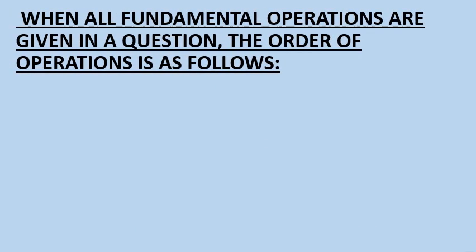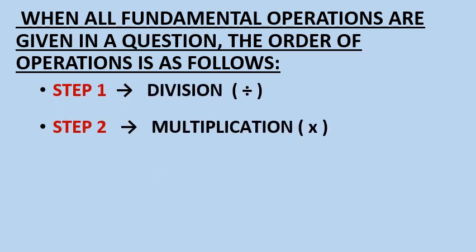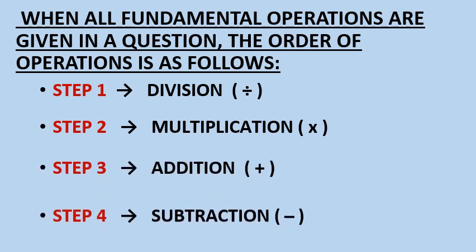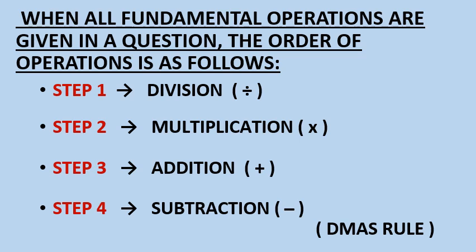When all fundamental operations are given in a question, the order of operations is as follows. Step 1 is division. Step 2 is multiplication. Step 3 is addition. And the last step, step number 4 is subtraction. To solve a question which involves all these operations, first we do division, then we do multiplication, then addition, and in the last subtraction. In short, it is called DMAS rule.